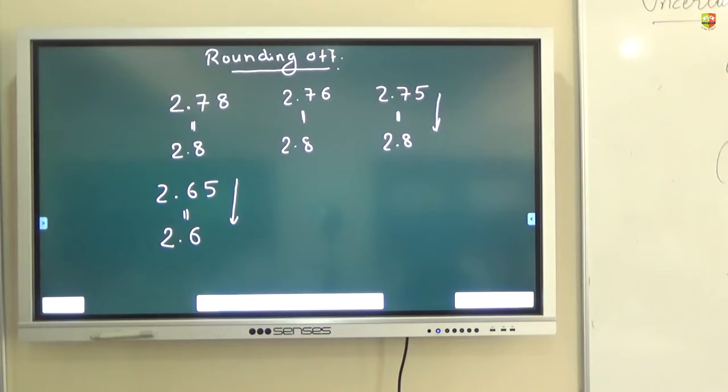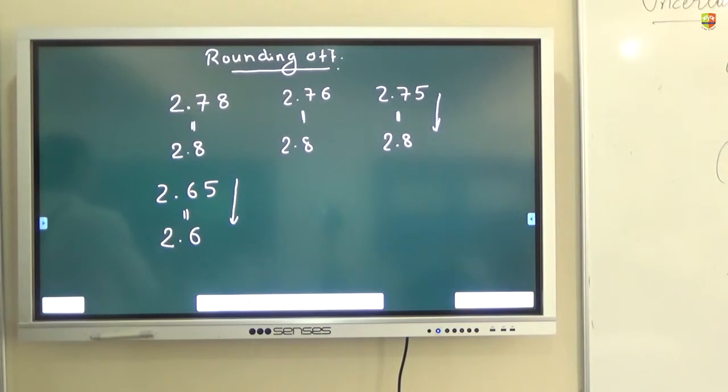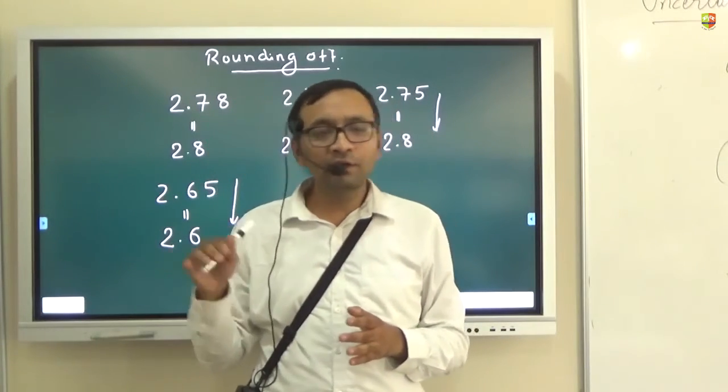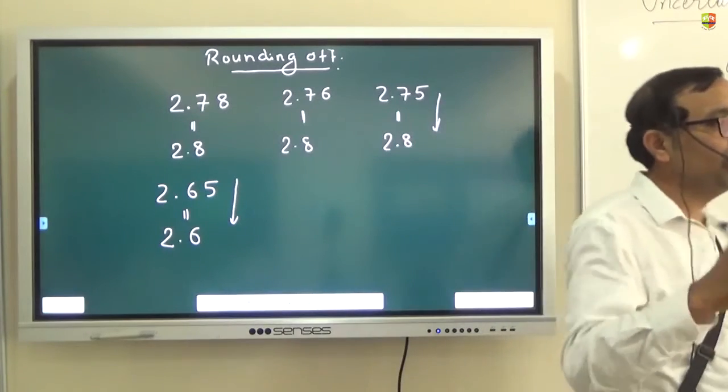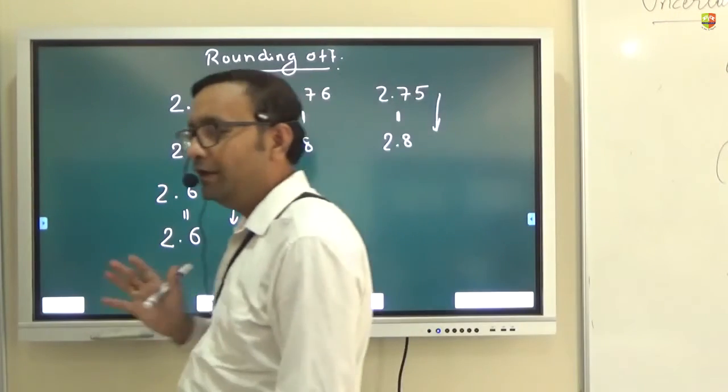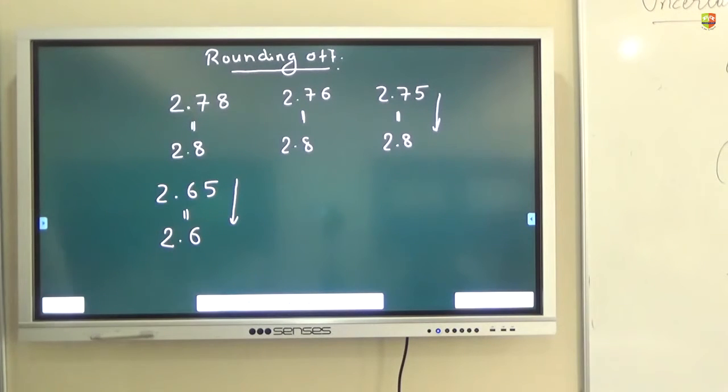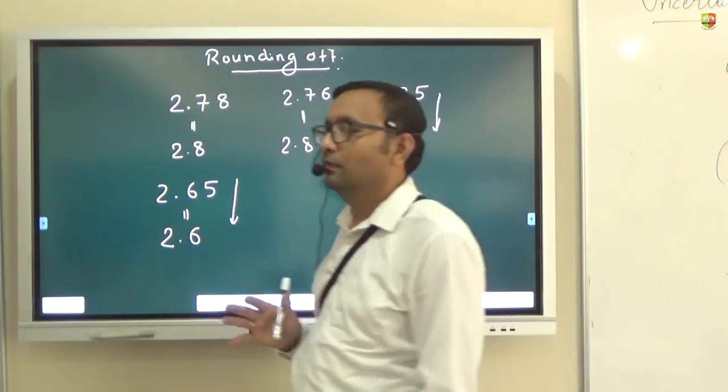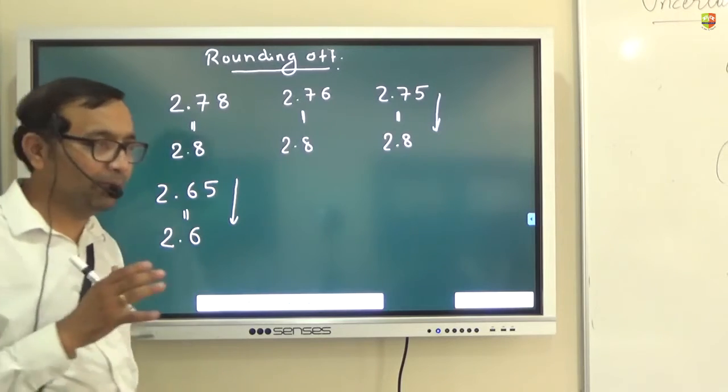So this is the rounding off rule. Any doubts whatsoever on the rules? You can ask me like these are the rules, what will happen to this scenario—but let's not question the rule itself. You can't question the rule because that rule itself is an assumption. It is not logical—it has some logic but it is not a mathematical logic. Any doubts? What if the question is 0.5? Then what will happen? If you have to round off, then it will be 0. What if it is 0.15? 0.2, if you have to round off.